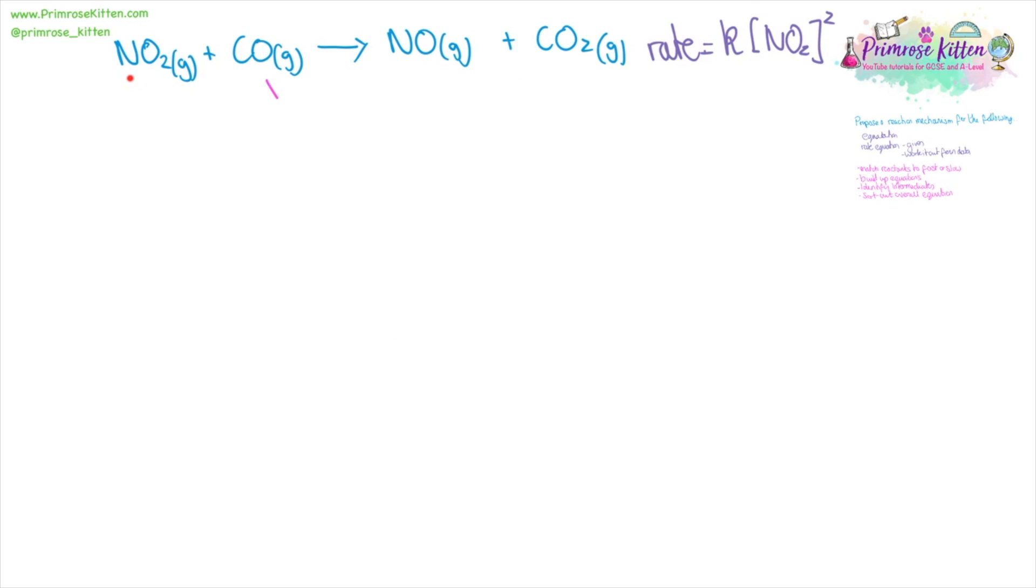So in this we have NO2 and carbon monoxide reacting to make NO and CO2, and here is our rate equation. And the first thing we can see is that carbon monoxide is not in the rate equation. That means it must be in the fast step. NO2 is in the rate equation, which means it must be in the slow step. And we can see that the rate equation has two molecules of NO2 in the slow step.